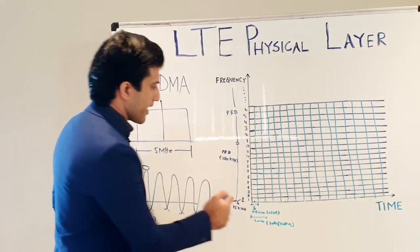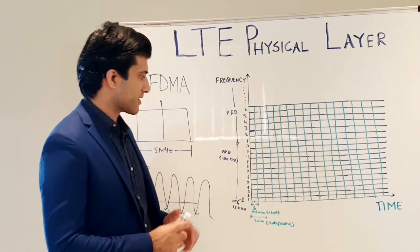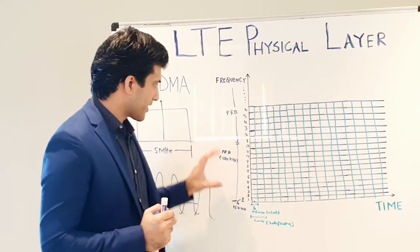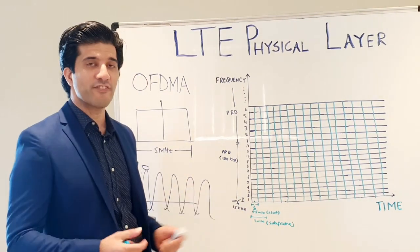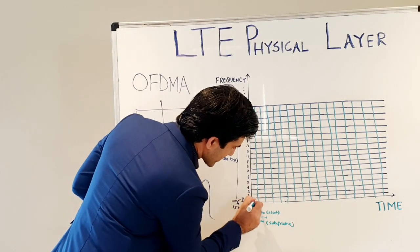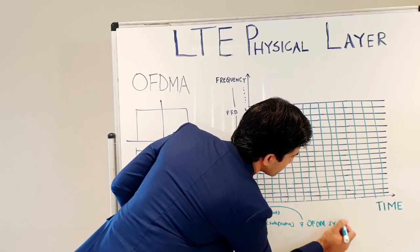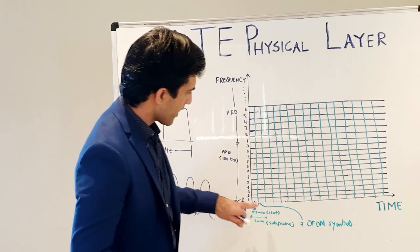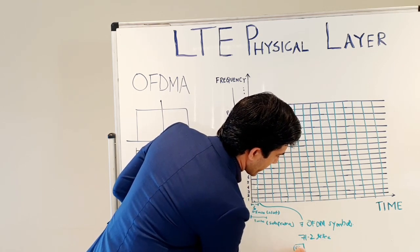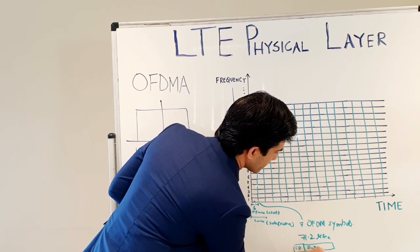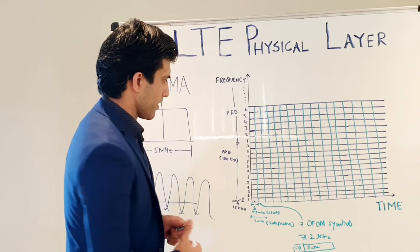In the time domain, one resource block spans a slot of 0.5 milliseconds. So the basic physical resource block is 180 kilohertz in frequency and 0.5 milliseconds in time. Inside this 0.5 millisecond slot we have 7 OFDM symbols. Each symbol is approximately 71.2 microseconds and consists of a cyclic prefix followed by the data portion.